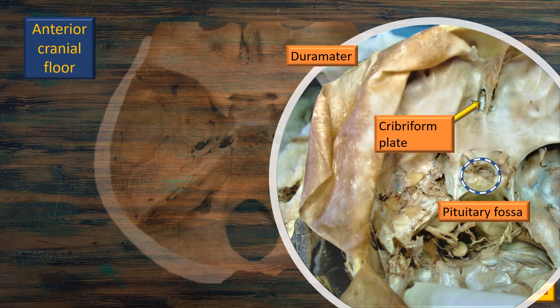The flap that has been reflected is the dura mater, reflected off the edge of the cut bone. The cribriform plate can be seen on either side of the falx cerebri. The crista galli is not visible because the falx is attached to it. Just for identification, although it does not belong to this fossa, you can see the centrally located pituitary fossa on a more posterior plane — we will discuss that in more detail in the middle cranial fossa discussion.